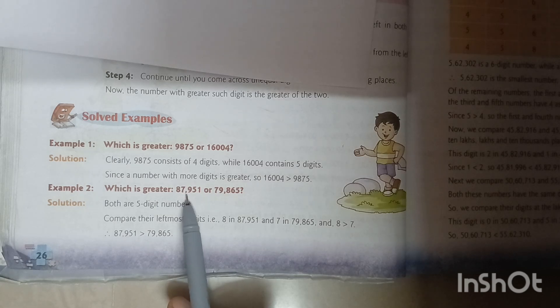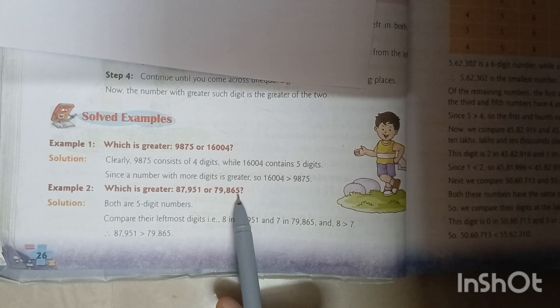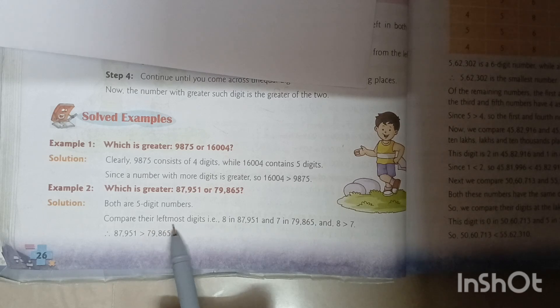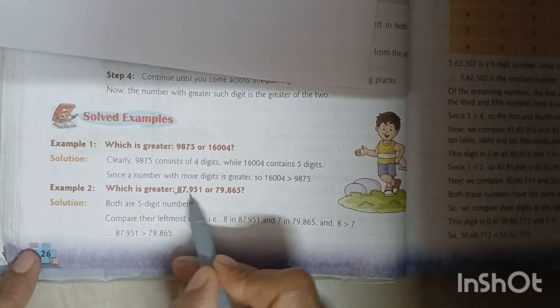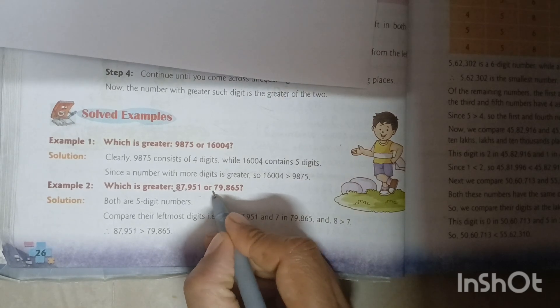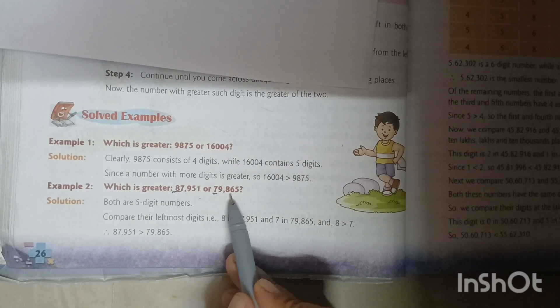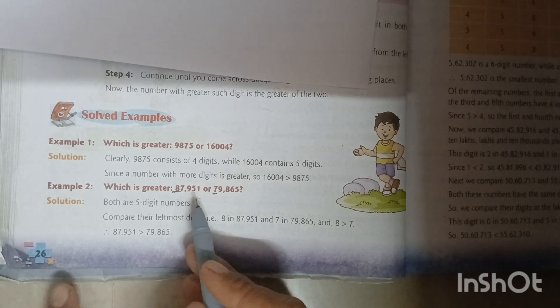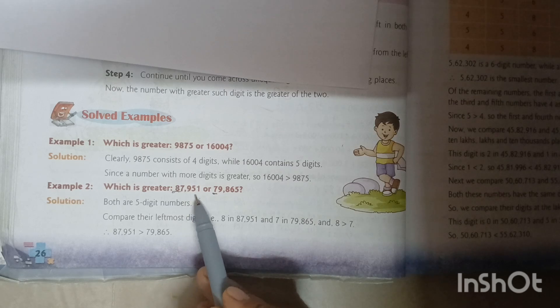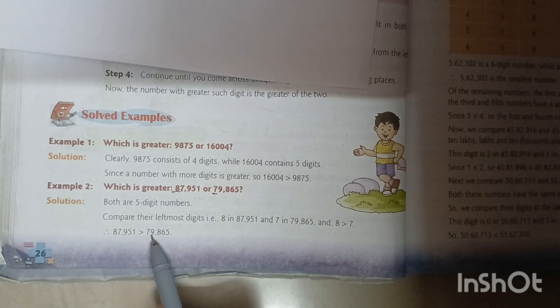Example 2: Which is greater, 87,951 or 79,865? Both are 5-digit numbers. Compare their leftmost digit: 8 in 87,951 and 7 in 79,865. Since 8 is greater than 7, therefore 87,951 is greater than 79,865.